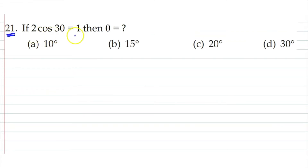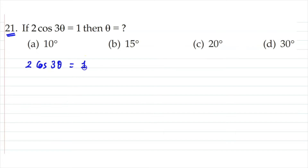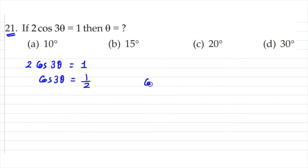The next question: 2 cos 3θ equals 1. This is exactly the same type as the last question. Dividing both sides by 2, we get cos 3θ equals 1/2. Now we have to check this value in the cosine row of the table.